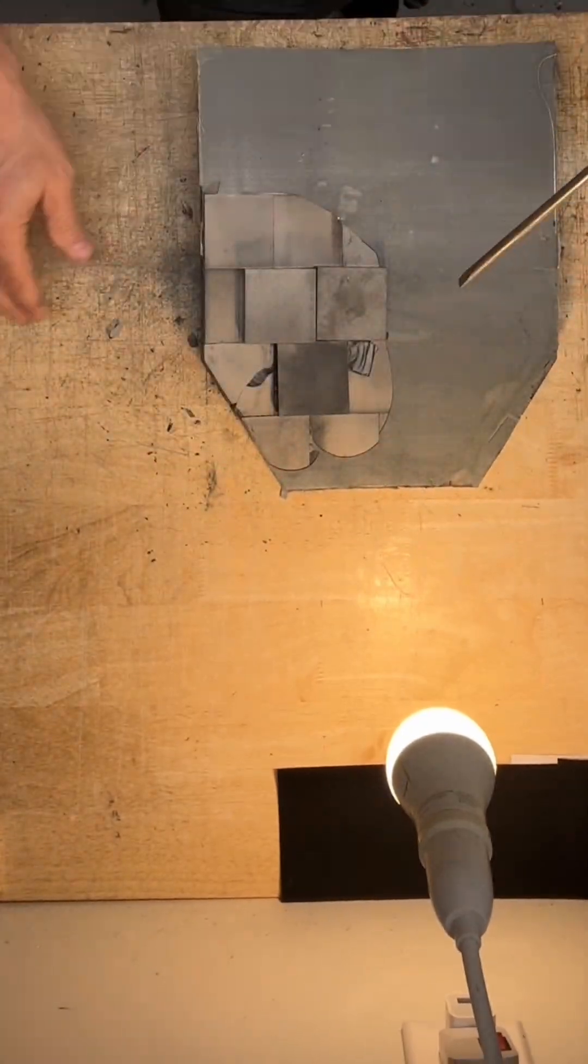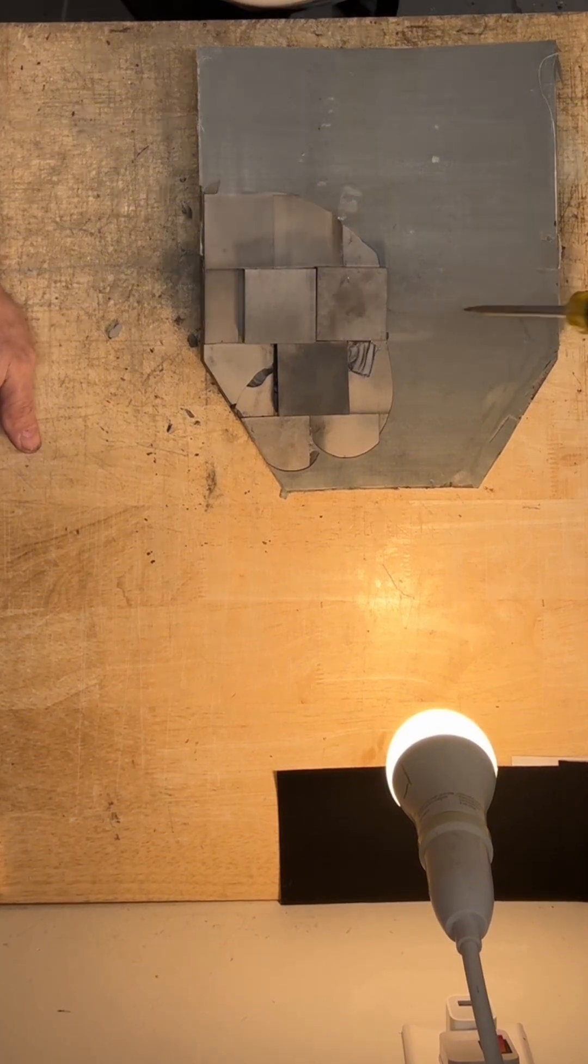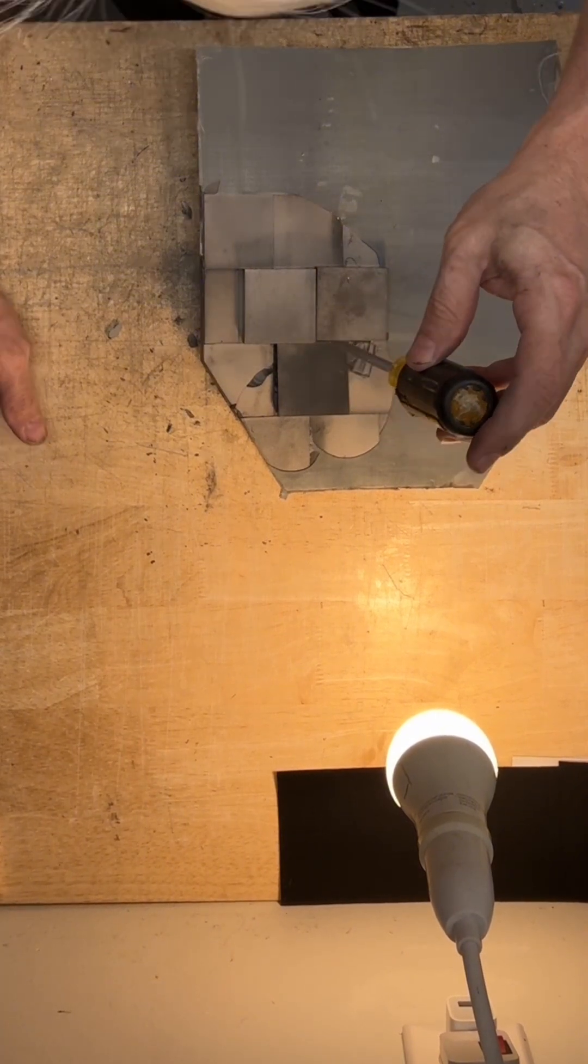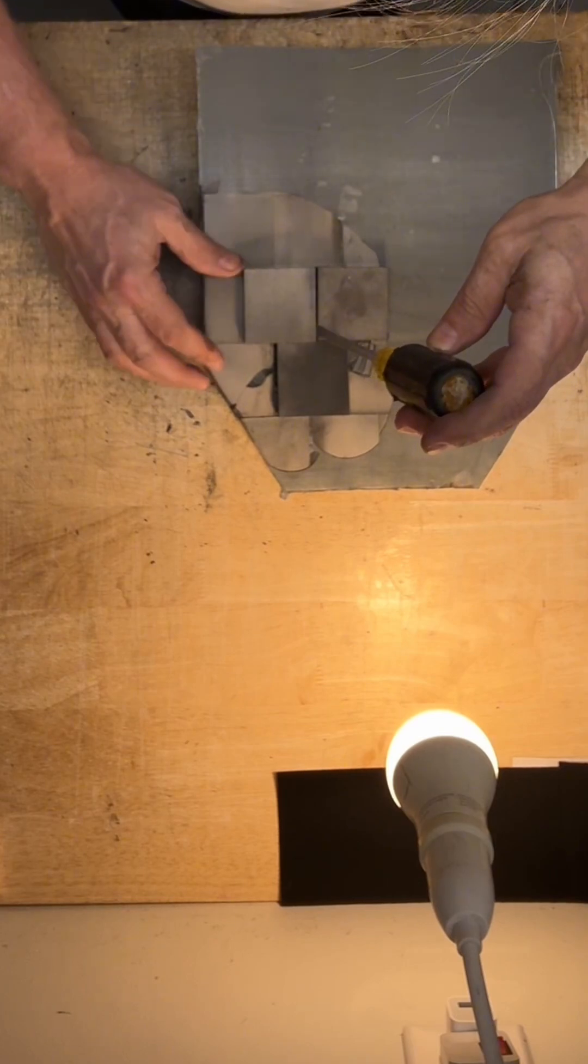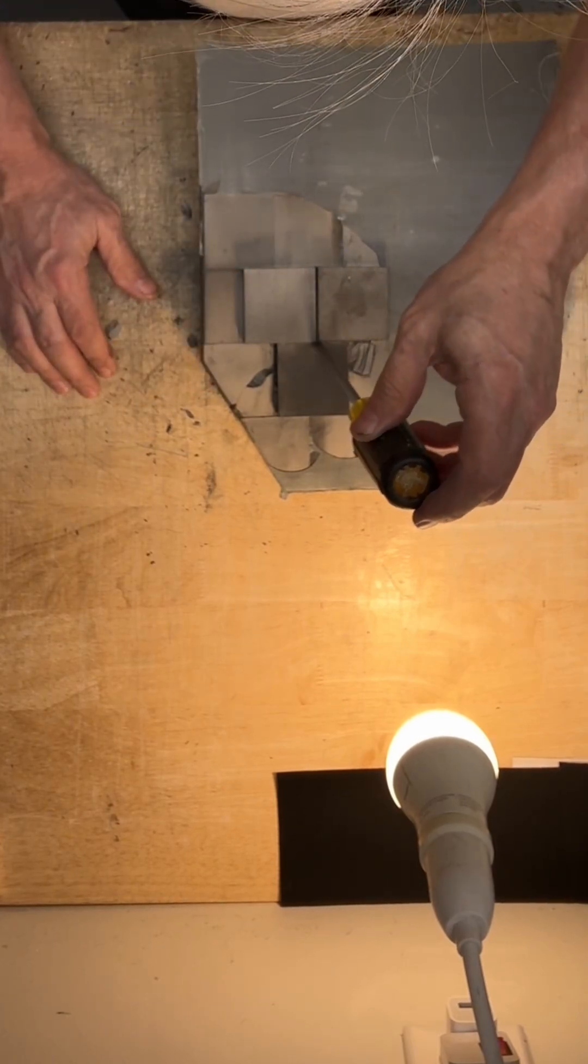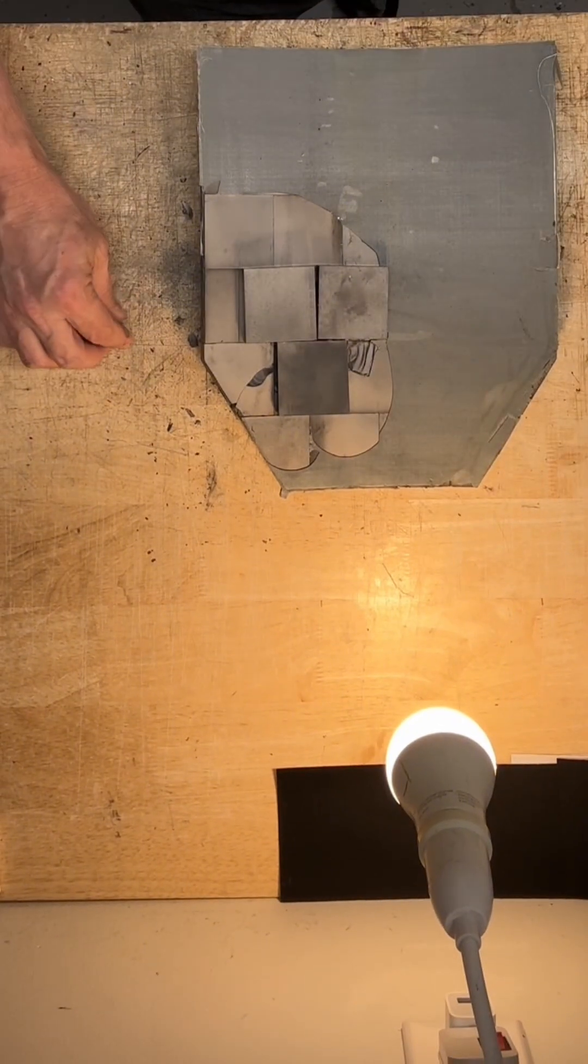So this particular 30-06 armor-piercing bullet hit the seam, the vertical seam between these two and the horizontal seam between these three, and still stopped it very well.